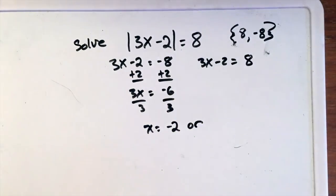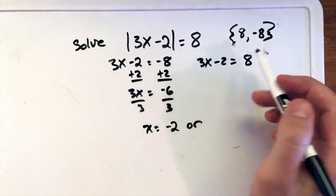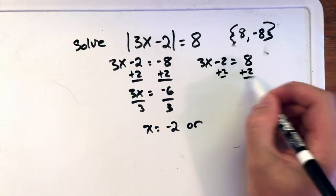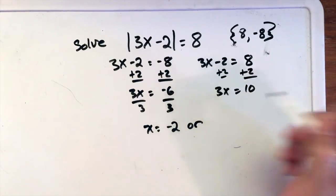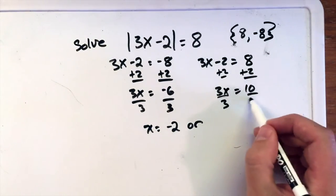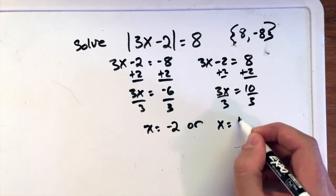Or on this equation where we set it equal to positive 8, we add 2 to both sides, but this time 8 plus 2 gives us 10, and we're left with 3x. We bring it down here, and then we divide by 3, and we're left with x equals 10 thirds.